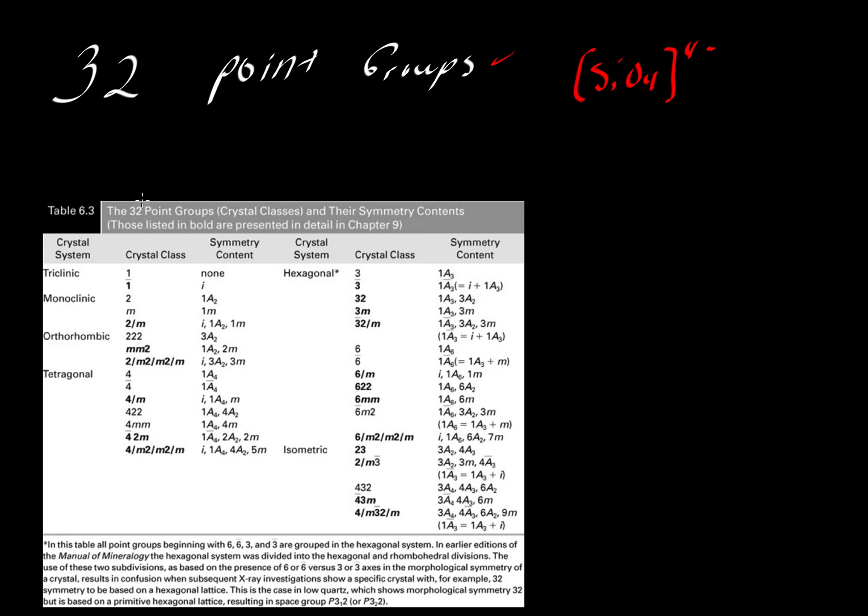In this table by Klein and Dutro, we see the 32 possible point groups. What are these point groups? They are the different ways in which we can arrange atoms or clusters of atoms around a point, and we have various symbols.